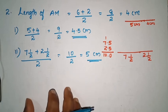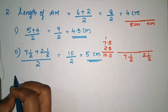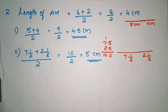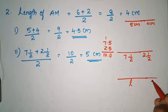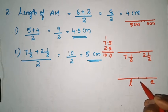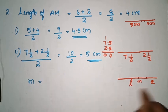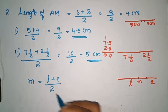What is the third question? A line of length L centimeters is extended by E centimeters. The midpoint M is equal to (L plus E) divided by 2.